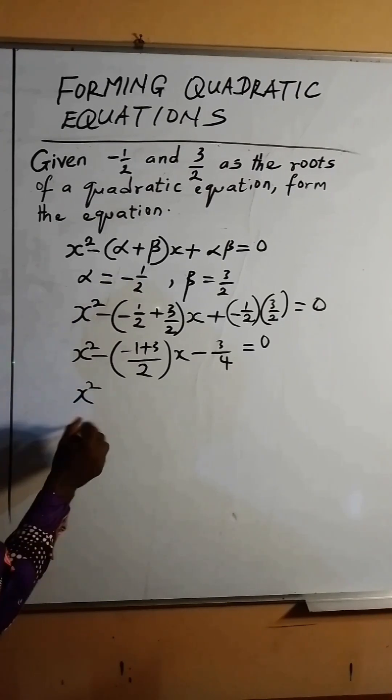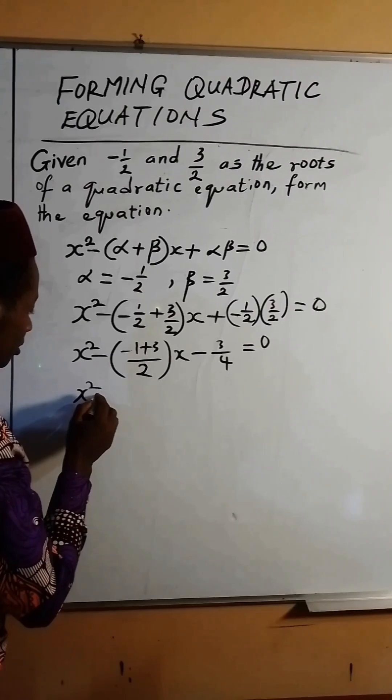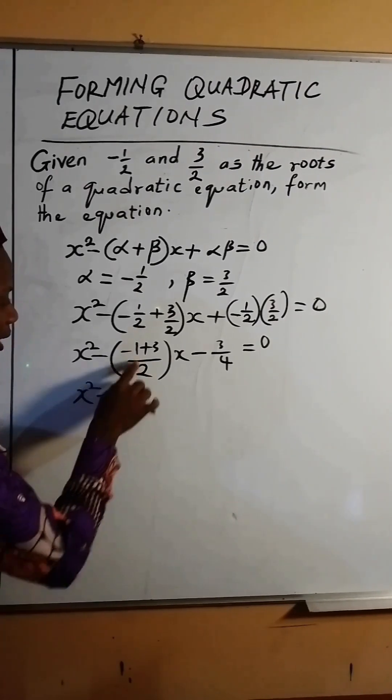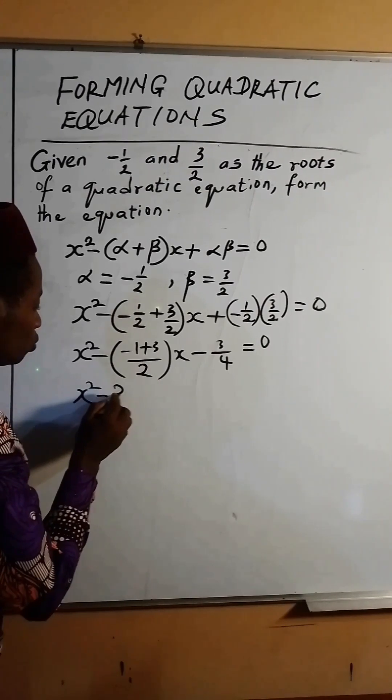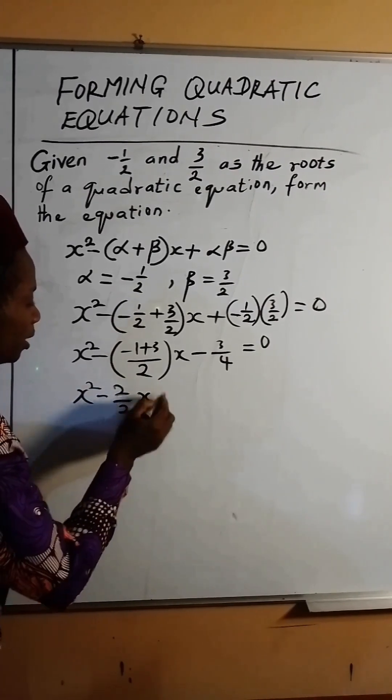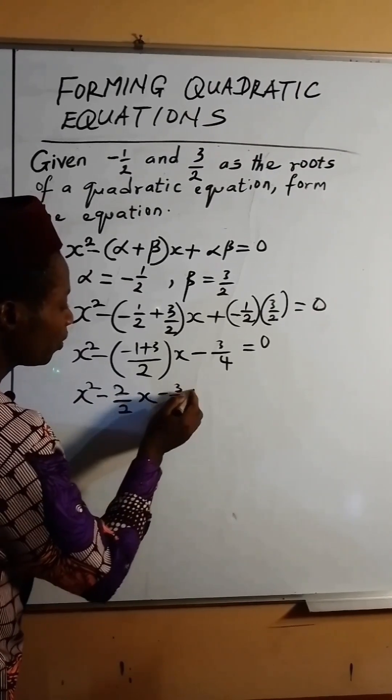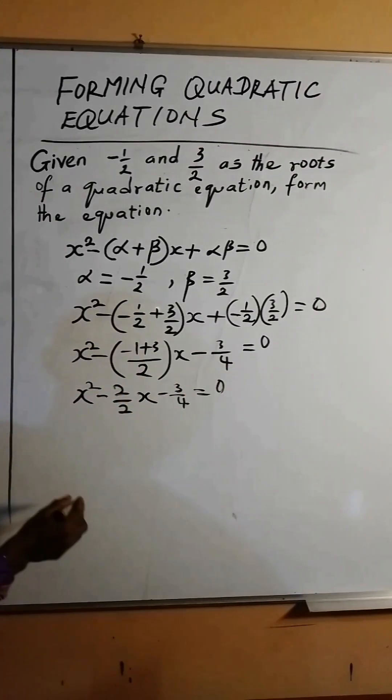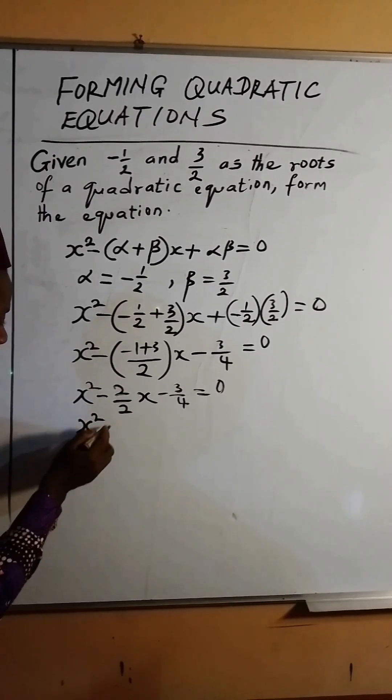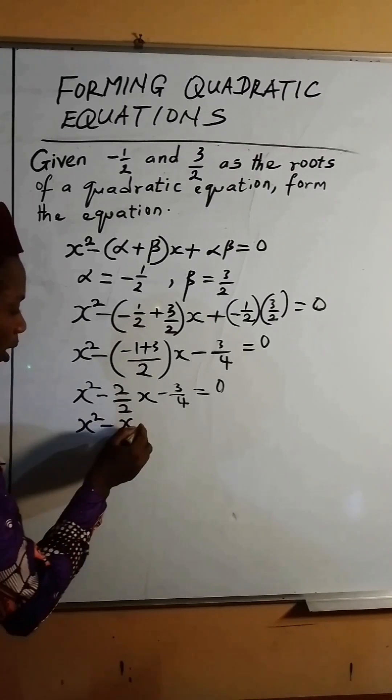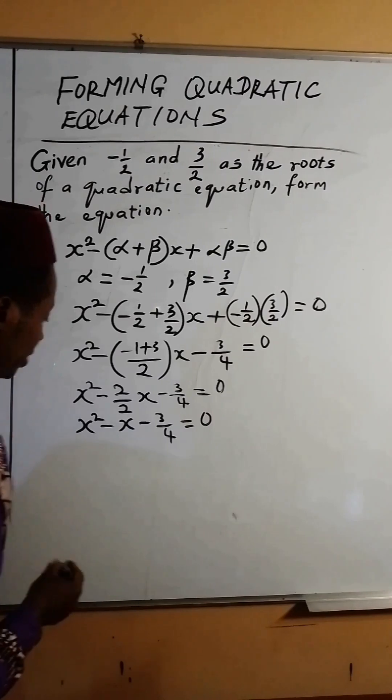So if we finish up, minus 1 plus 3, I'm going to have minus here. So this is 3 minus 1, which is 2. Then we divide by 2. Then we have x here, minus 3 over 4 equals 0. 2 divided by 2 is 1, so we have x squared minus x, which is 1x, minus 3 over 4 equals 0.